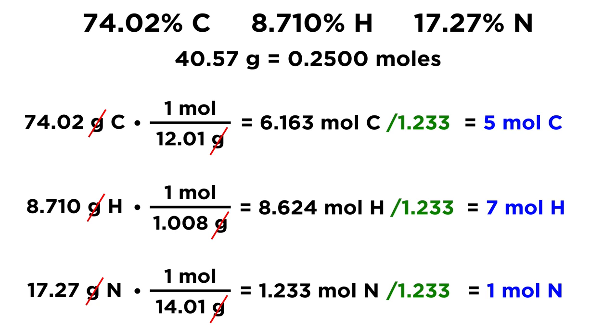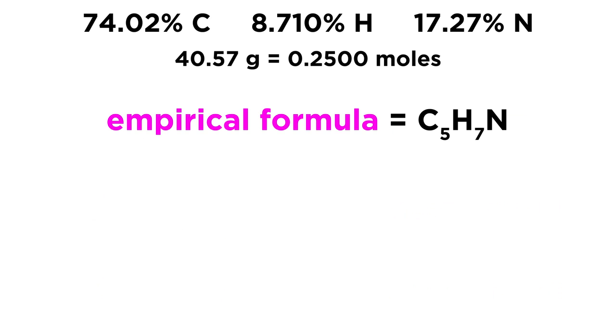So that means for every nitrogen atom in the sample, we have 5 carbon atoms and we have 7 hydrogen atoms. So that means the empirical formula of nicotine must be C5H7N. That is the only way for these mass percentages to work out the way that they are.